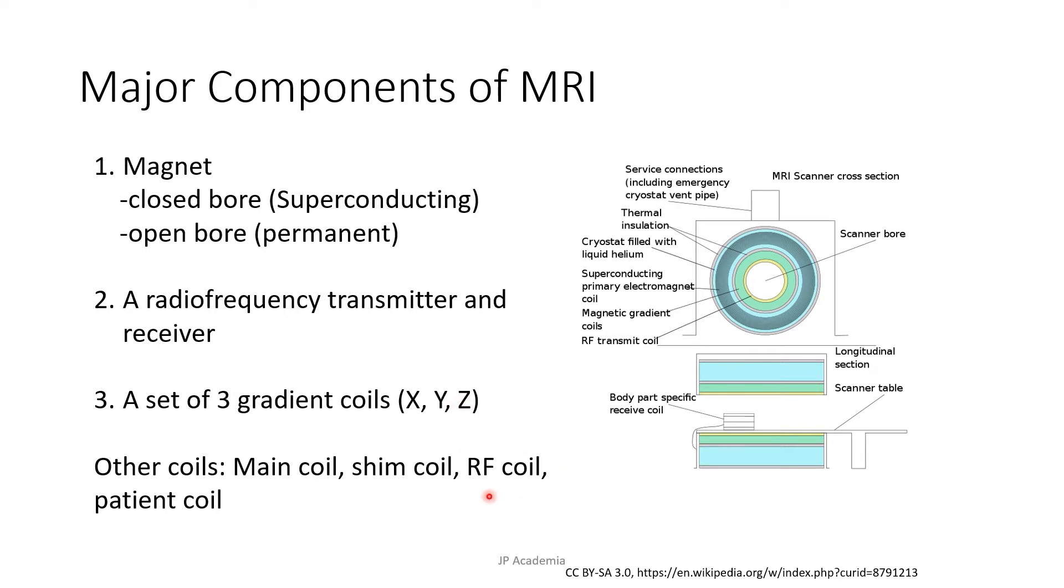RF coils transmit B1 field, which is used to manipulate the precession of the magnetization vector, which we will discuss later. Last, we have the patient coil, which primarily detects MR signals.